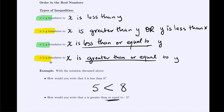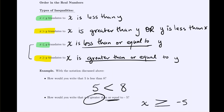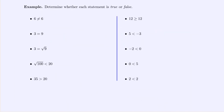'x is greater than or equal to negative 5' — the 'or equal to' means I'll have the ≥ symbol. I've got x and negative 5, and since x is greater, the point of the angle goes away from x. Because it's 'greater than or equal to,' we also include the extra line. Now let's look at some statements and determine whether they're true or false.